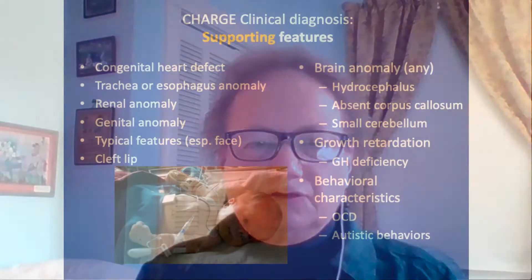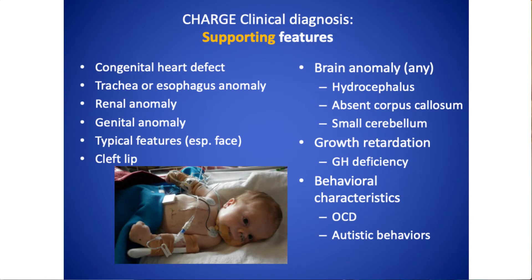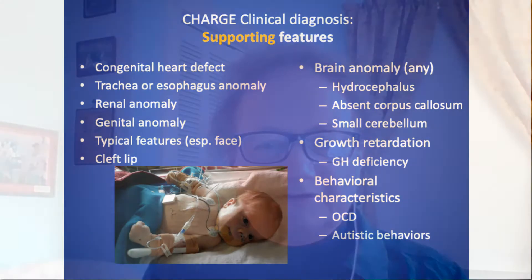The supporting features include congenital heart defects, problems with the trachea or esophagus, renal and kidney problems, genital problems, typical dysmorphic features especially of the face, sometimes facial clefts like cleft lip, brain anomalies, growth retardation including sometimes growth hormone deficiency, and behavioral characteristics especially obsessive compulsive disorder and autistic behaviors.